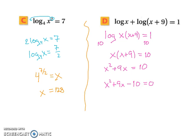Well, now we can factor. So we need two numbers that multiply to give us negative 10 but when we add them together they're going to give us a positive 9. So that would be positive 10 and negative 1. So our answers would be negative 10 and 1.